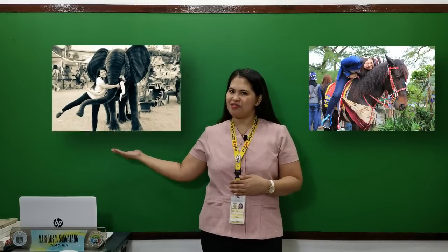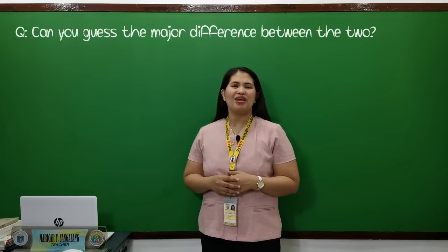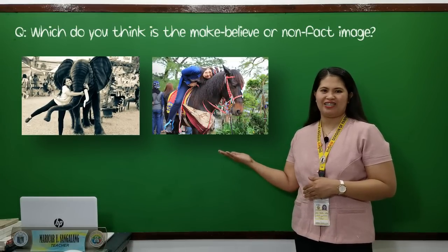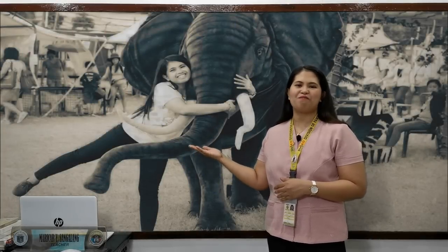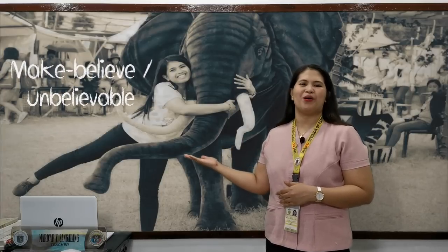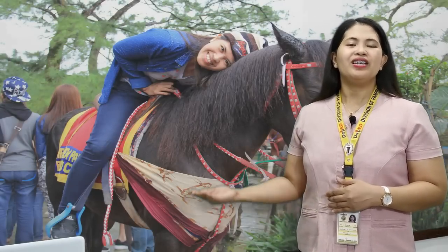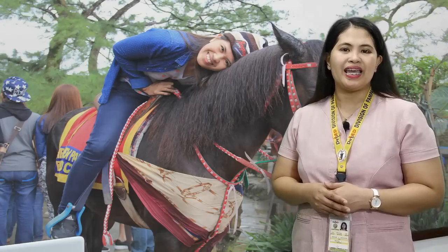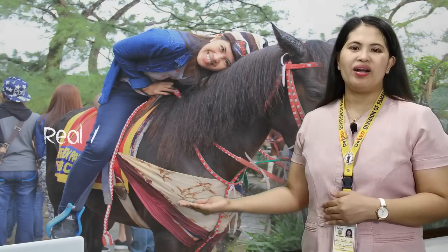Another possible example: I'm riding on a horse and I'm hugging an elephant. Can you guess the major difference between the two? One of these two images shows a real animal while the other is just a stuffed replica of an animal. This elephant is just a stuffed replica — therefore it is make-believe or unbelievable. I'm riding a horse found in Baguio City where people ride it for a few seconds for picture-taking. Therefore, it is real or believable.